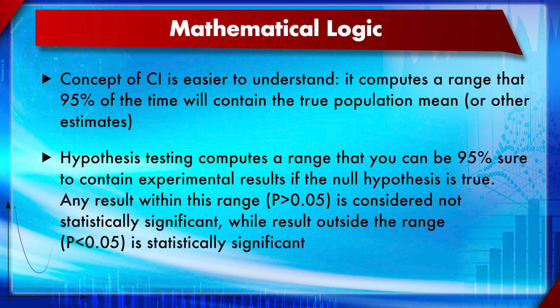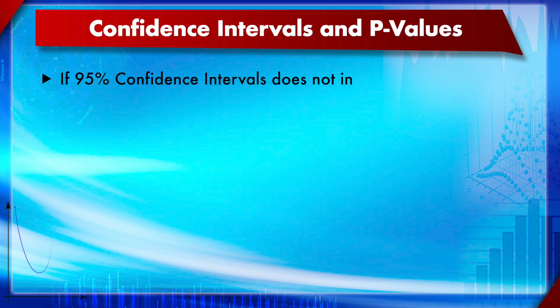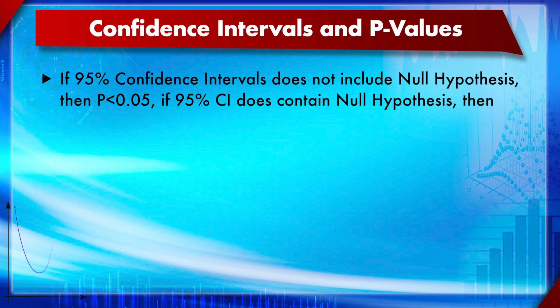If a result resides on the end section of the distribution, only then is it a significant result. Confidence intervals and p-values are really closely related: if a 95% confidence interval does not include the null hypothesis, then the p-value must be less than 0.05. If the 95% CI does include the null hypothesis, then the p-value has to be greater than 0.05.